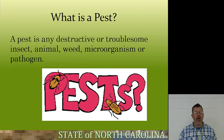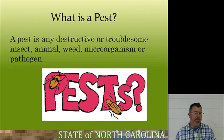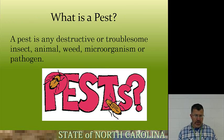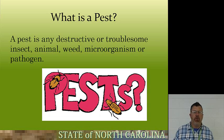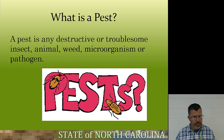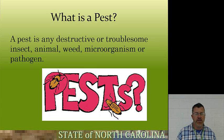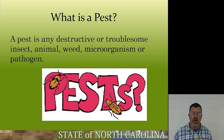The first thing we're going to talk about is what is a pest. Your textbook defines it as: a pest is any destructive or troublesome insect, animal, weed, microorganism, or pathogen. When you look at this from an ornamental and turf side, especially turf grass, the number one pest is going to be weeds. People want a weed-free lawn. Next, they want a disease-free lawn — they're going to want you to apply fungicides to get rid of brown patch. They're also going to want you to apply insecticides to get rid of invertebrates in their turf grass.